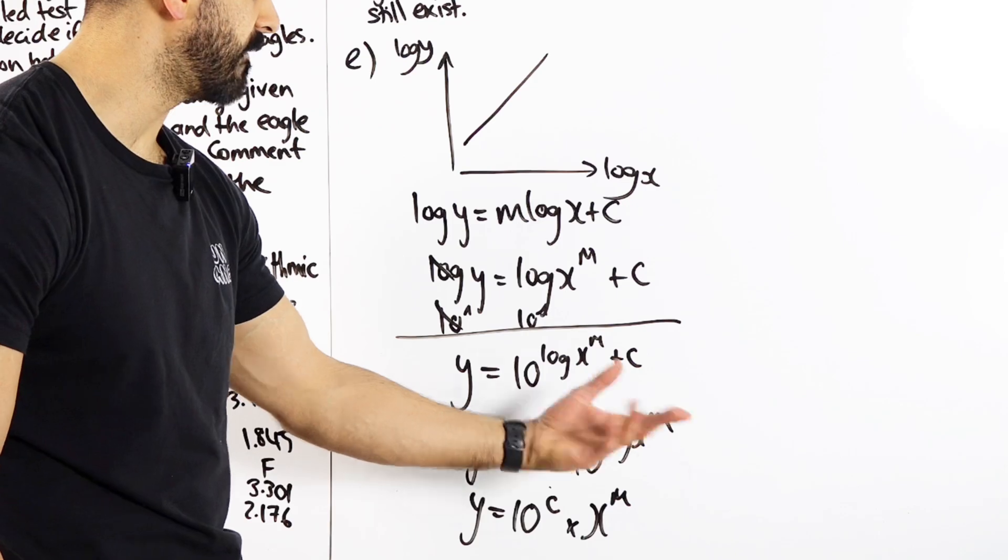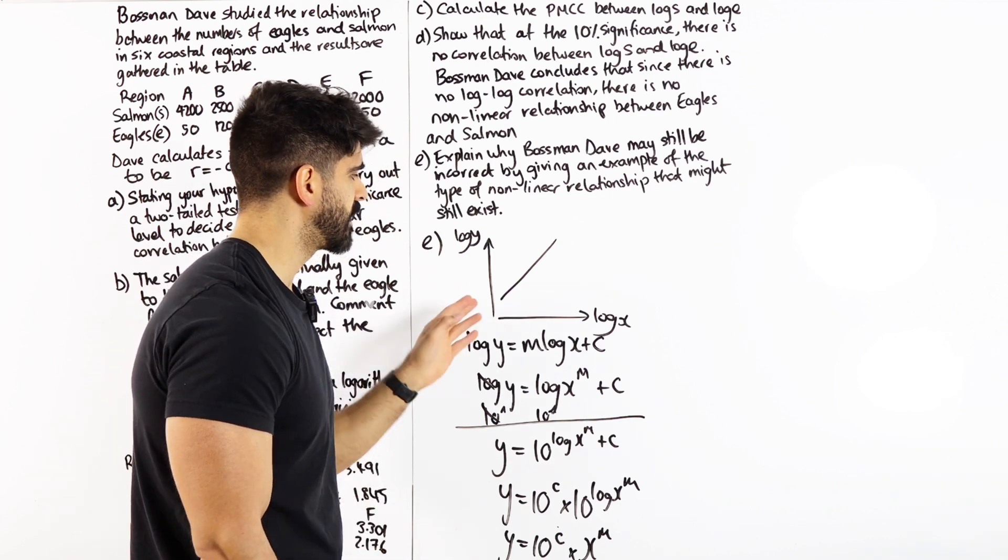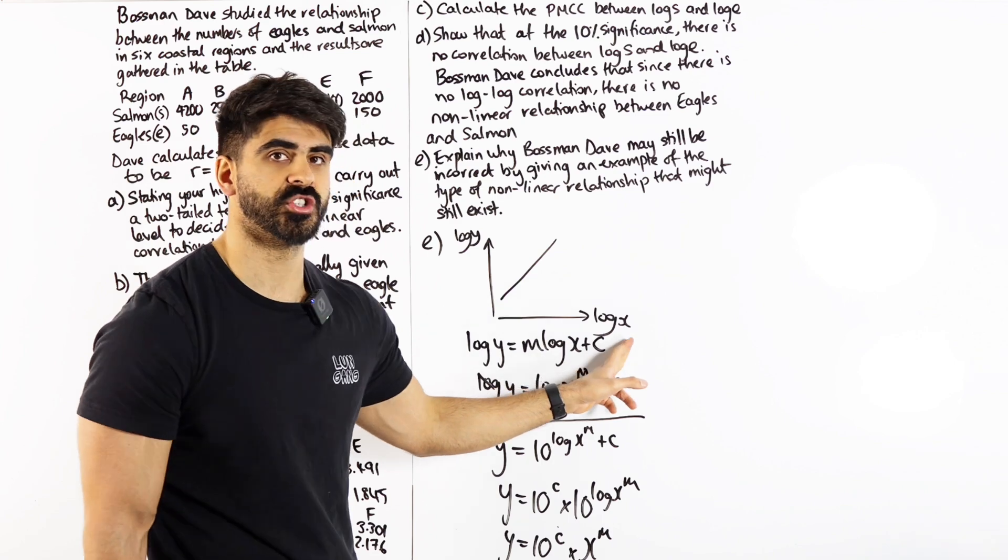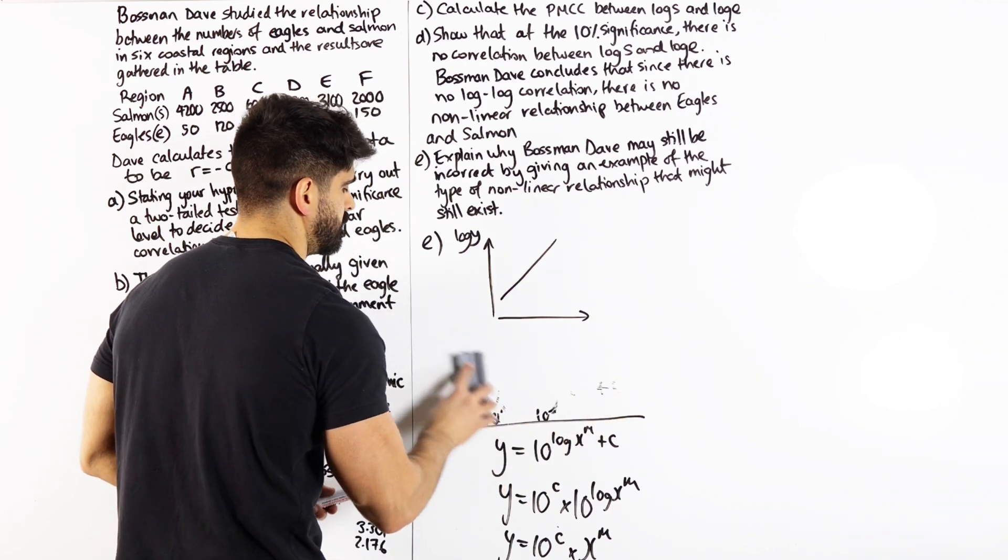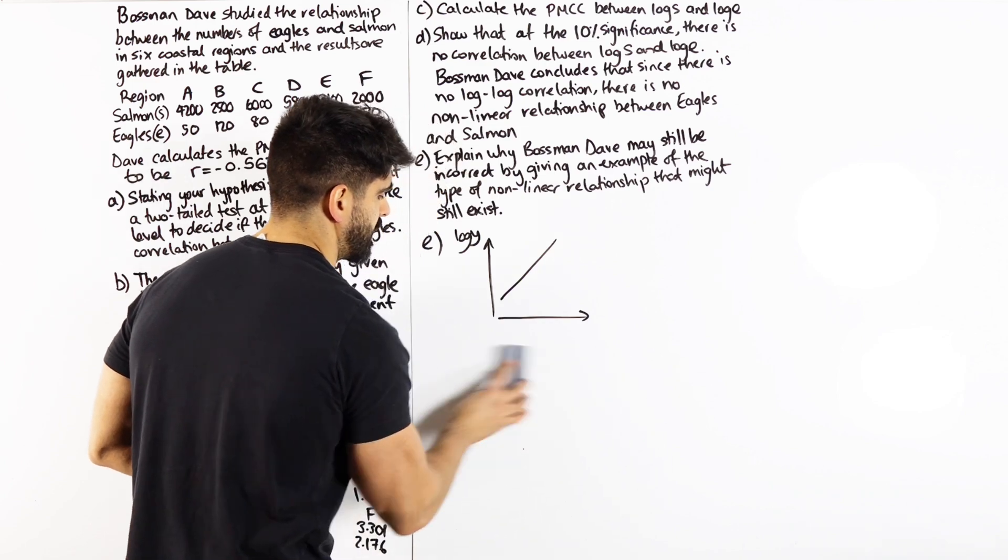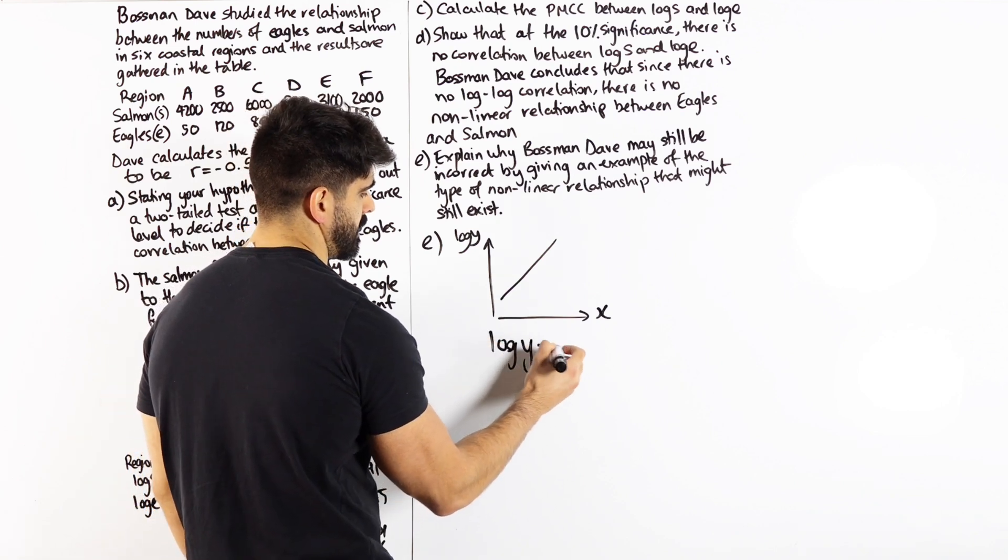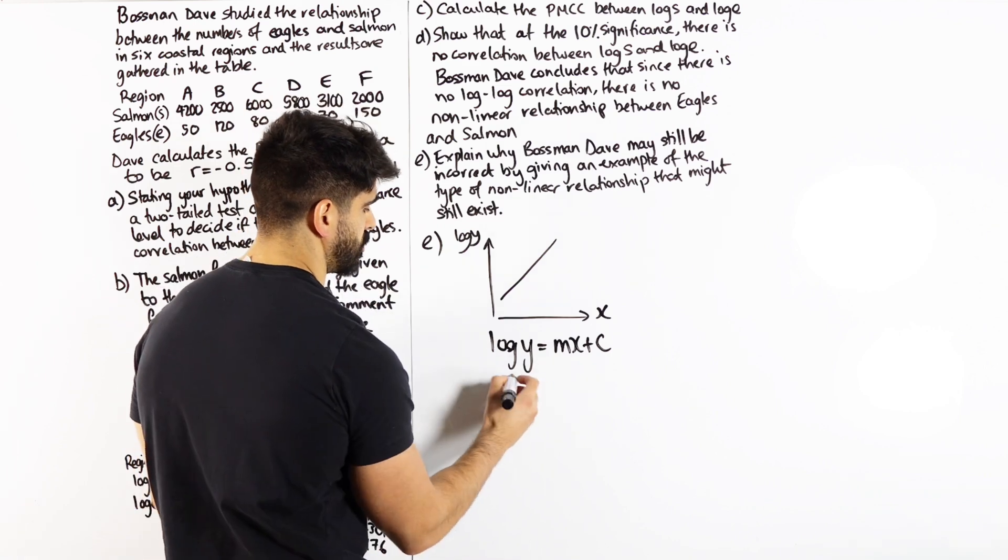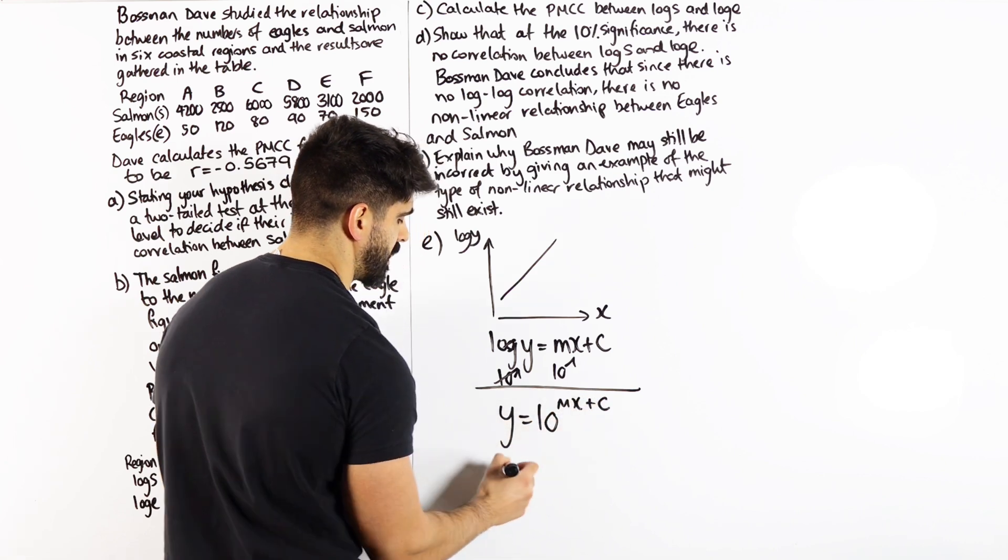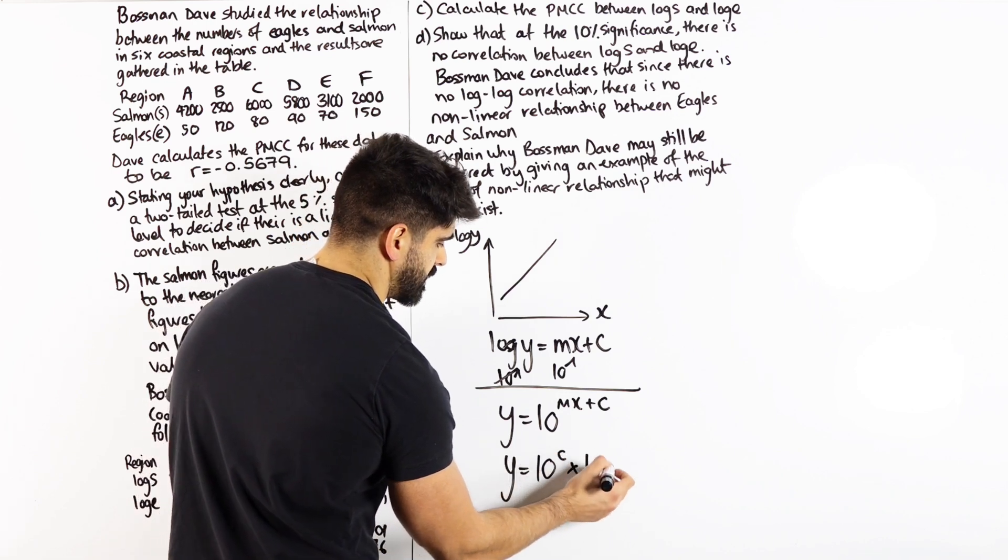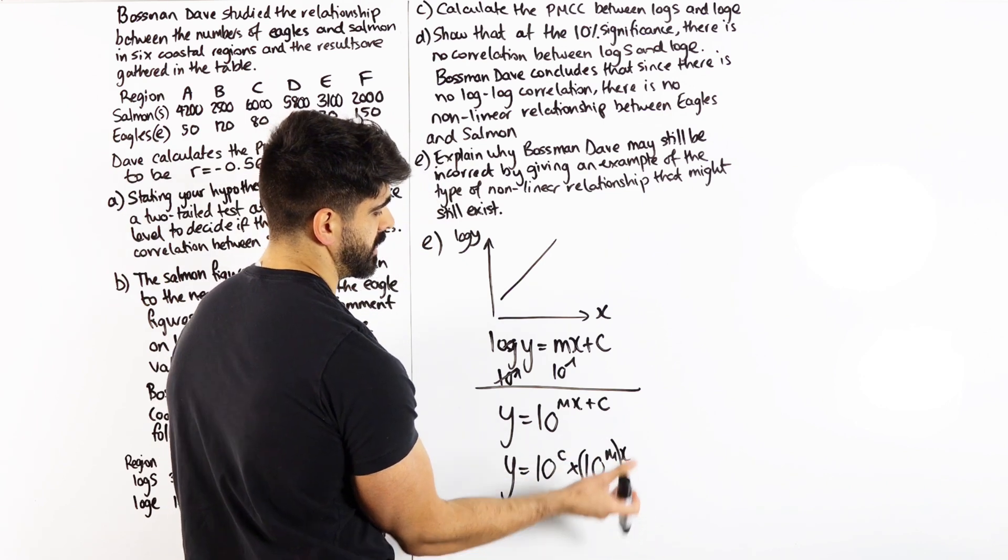It could be 2, 3, 4. So what Bossman Dave has shown is that there's no log log relationship but there could be a log y x relationship. Now do you guys know what that form is? Well if you have enough experience which you should because it's in year 12 you learn this that would be an exponential relationship. Let's prove it. So if we have this we have y is mx plus c so from here you just do 10 to the power of both sides that cancels y is 10 to the power of mx plus c which you break that off that is 10 to the power of c times 10 to the power of mx which if you put a bracket here that's an exponential some 10 to the power of m which is a number raised to the power of x.